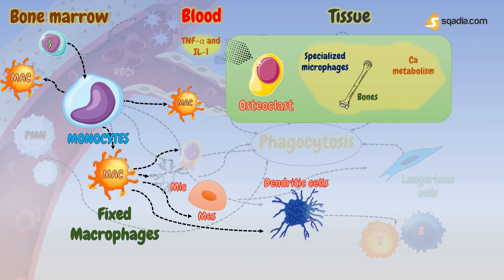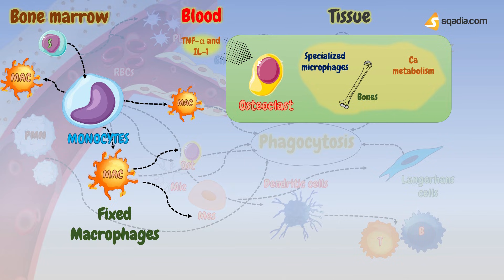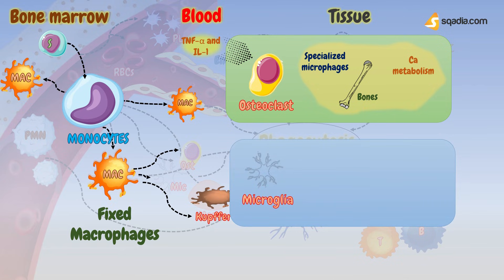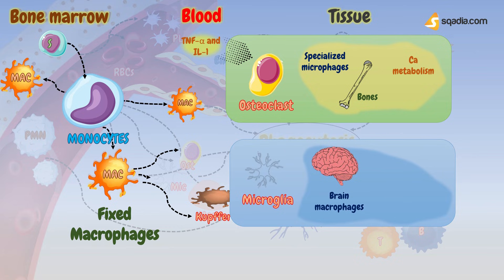Microglia: these are the phagocytic cells of the brain, implicated in tissue injury leading to Alzheimer's disease and multiple sclerosis. Unlike other tissue macrophages, microglia may be derived from a special precursor cell that enters the brain before birth and divides within the brain. They are involved in clearing dead neuronal cells.